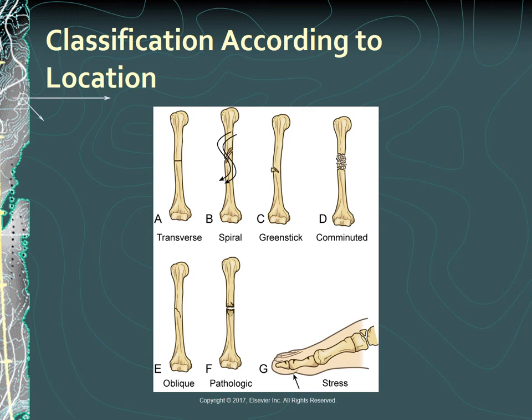E is an oblique fracture, in which the line of the fracture extends in an oblique direction. F, a pathologic fracture, is a spontaneous fracture at the site of a bone disease. G, a stress fracture, occurs in normal or abnormal bone that is subject to repeated stress, such as from jogging or running.